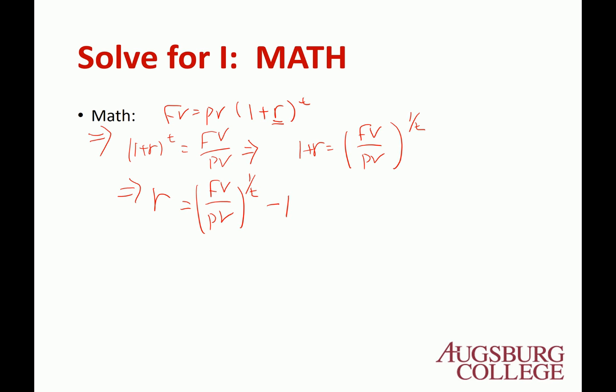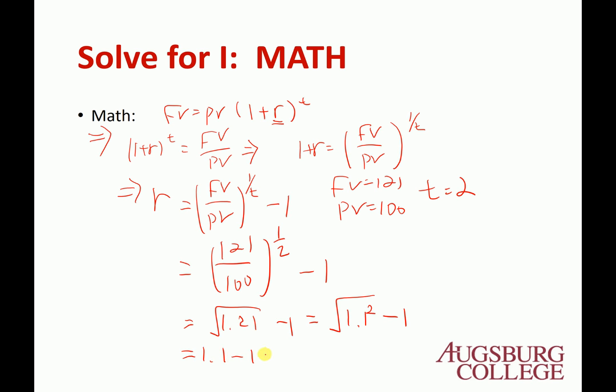For this example, future value equals 121, present value equals 100, T equals 2. Let's plug the numbers into this formula. R equals 121 divided by 100 to the power of 1/2, which is basically square root, minus 1. This gives us 1.21 square root minus 1, which equals 1.1 minus 1, so 0.1 or 10%. We know the answer already, and we just confirmed it.